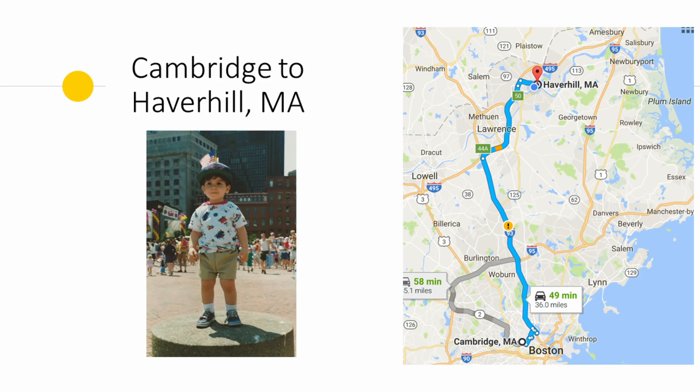When I was six years old, my family decided that it was time for us to move from Cambridge, Massachusetts, 36 miles north to Haverhill, Massachusetts. Things got a little too expensive for us in Cambridge. We moved up to Haverhill because we had some family there already. There was an opportunity for a job for my family, and I cried my entire way all the way up the highway.